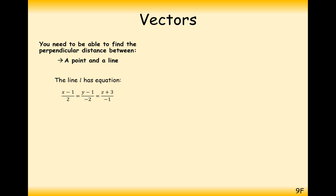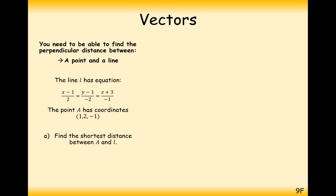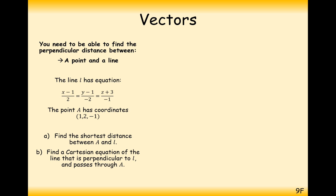Let's go through a question then. The line L has equation x minus 1 equals y minus 1 over minus 2 equals z plus 3 over minus 1. The point A has coordinates 1, 2, minus 1. Find the shortest distance between A and L. Part B is to find a Cartesian equation of the line that is perpendicular to L and passes through A — basically the equation of that shortest distance line.